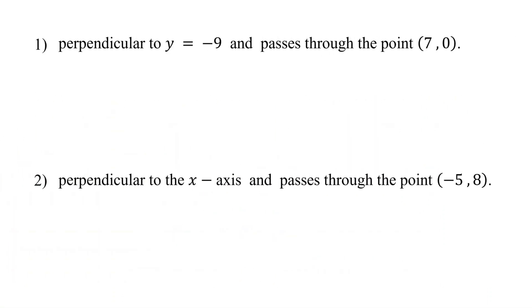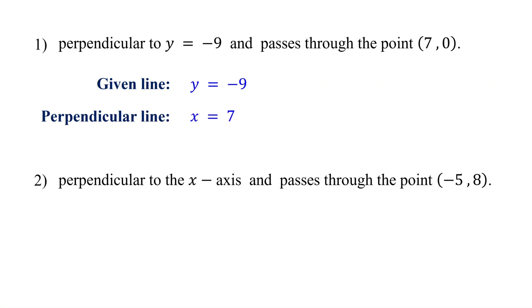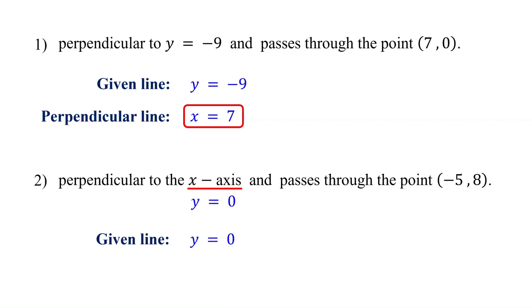Try these. For the first one, the given line is y equals negative 9, which is a horizontal line. A perpendicular line is vertical, with the equation x equals the x-coordinate of the given point. The second one does not explicitly state the equation of the given line. It says perpendicular to the x-axis. Note that the x-axis corresponds to y equals 0, so the equation of the given line is y equals 0, which is a horizontal line. A perpendicular line is vertical, with the equation x equals the x-coordinate of the given point.